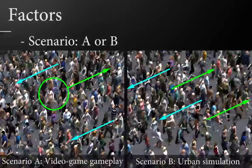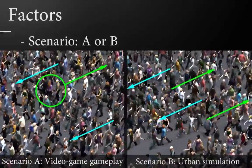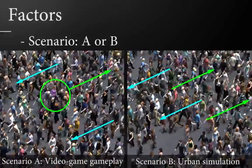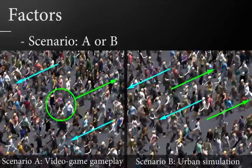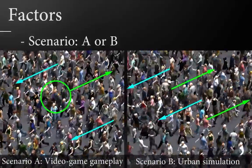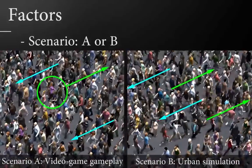The first one is a video game scenario where a single character is walking against a unidirectional flow. The second one is an urban scenario where two large groups of characters are walking in bidirectional opposite flows.